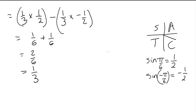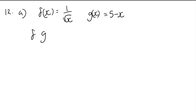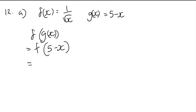Question 12a: f of x equals 1 over root x, and g of x equals 5 minus x. Find f of g of x. There is a mark for showing the intermediate step: f of (5 minus x). Then replace the bracket where x appears in the f function, giving 1 over root(5 minus x). That's us done 12a.